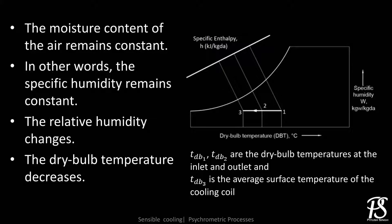On the psychrometric chart, this process is represented by a horizontal line moving towards decreasing dry bulb temperature. Though ideally the dry bulb temperature of air should reach the coil surface temperature, but practically this is not observed, as shown in the figure.